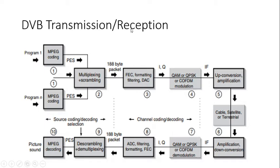In this lecture we will be seeing about the reception of digital TV signals in case of DVB-S, DVB-C, and DVB-T. This is a complete transmission-reception chain of digital video broadcasting. The steps include source coding, followed by channel coding, modulation, up-conversion, amplification, and transmission via cable, satellite, or terrestrial medium. At the receiver, the complementary reverse operations are performed.